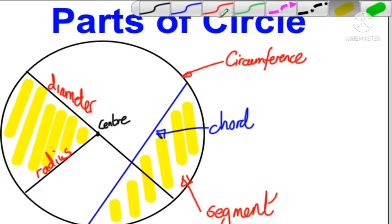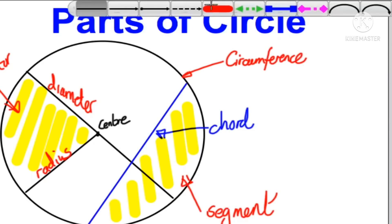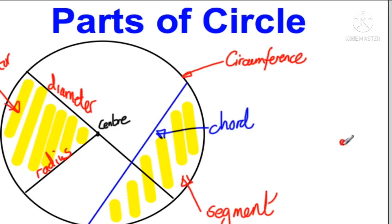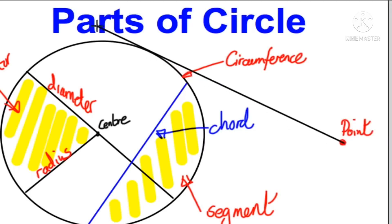The sector of a circle: a sector is a region bounded by an arc of the circle and the two radii to the end points of the arc. The next part is the tangent of a circle — a straight line which has one and only one point in common with a circle, however far either way it is produced, is called a tangent of the circle. The common point is called the point of contact.